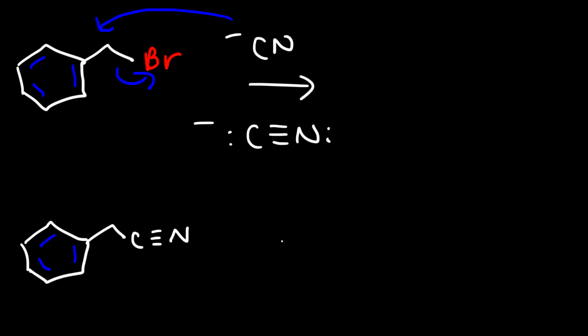Now, once we have this nitrile group, we could reduce it with hydrogen gas, and so we could turn this into a primary amine. But this time we're going to have an additional carbon. So we have an amine where there's two carbons between the NH2 and the benzene ring. In the last example, there was only one carbon in between them. In addition, we could react this with H3O+, turning the nitrile group into a carboxylic acid. So as you can see, there's a lot that we could do here.